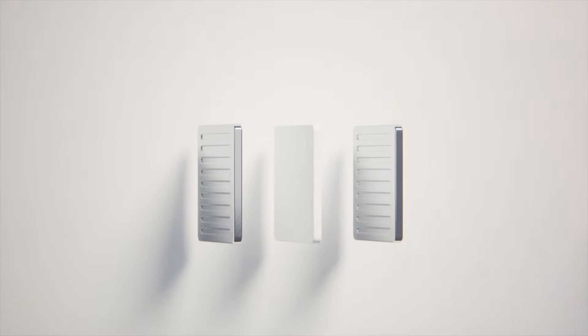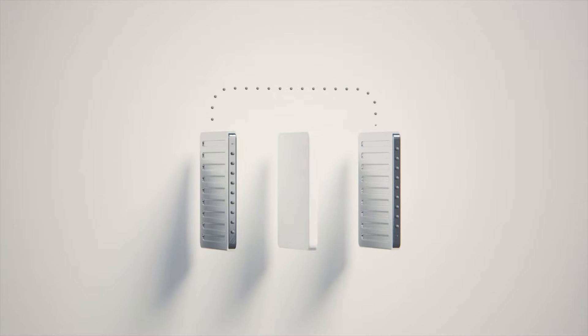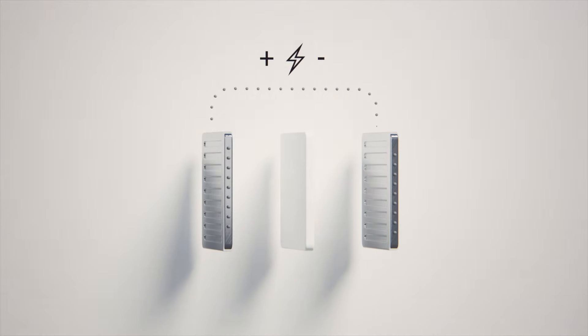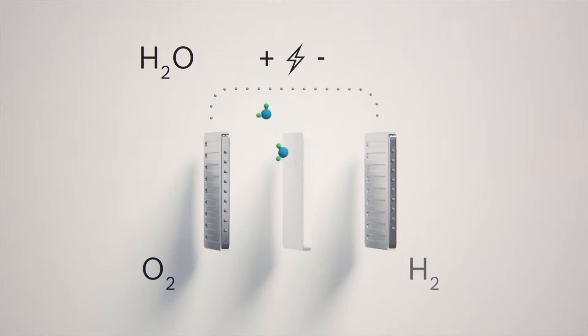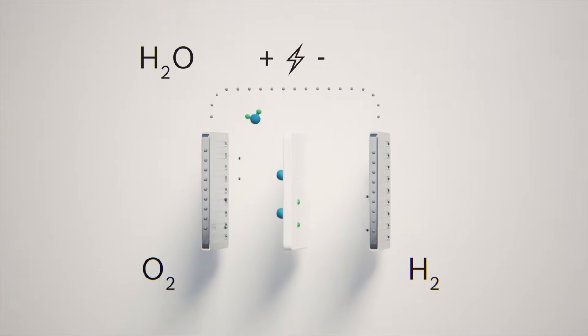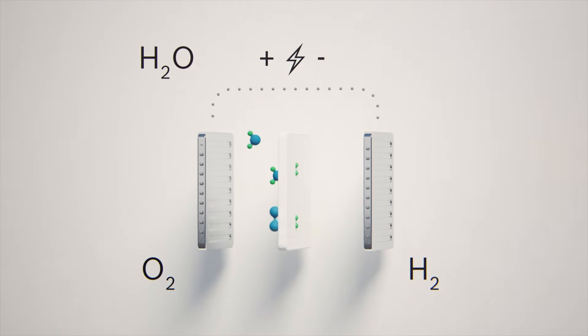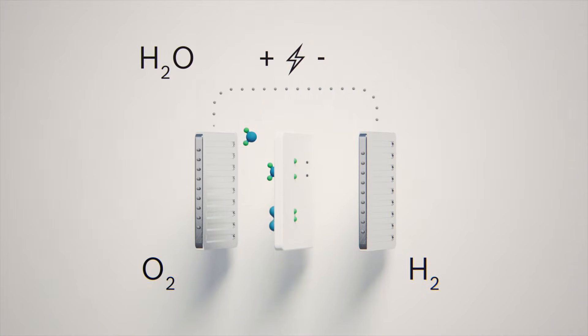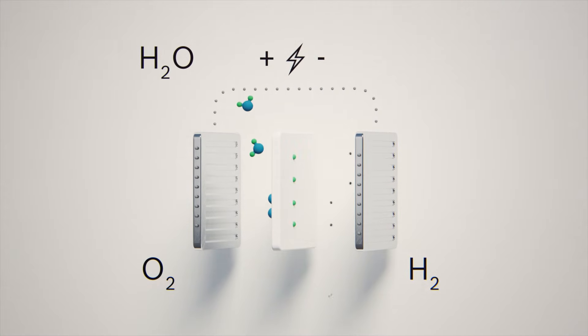It is here that a central proton exchange membrane separates the anode and cathode electrically. An electrical voltage is applied to break down the water into its components, into oxygen and hydrogen in the form of protons that migrate through the membrane. In this way, oxygen forms at the anode and hydrogen at the cathode.